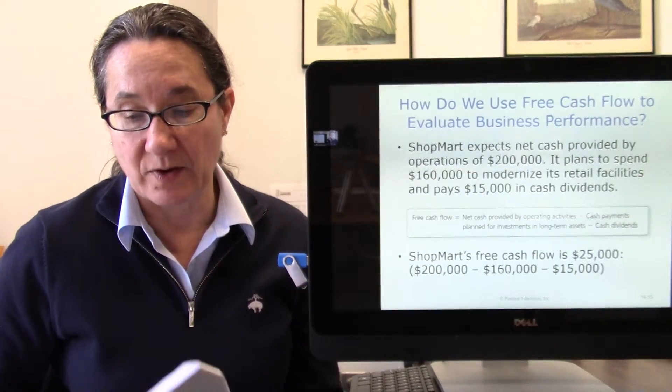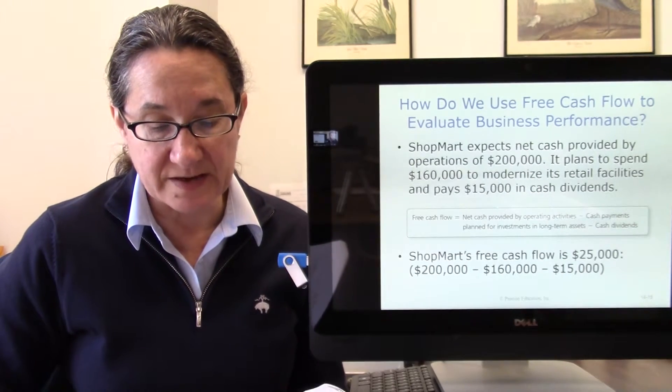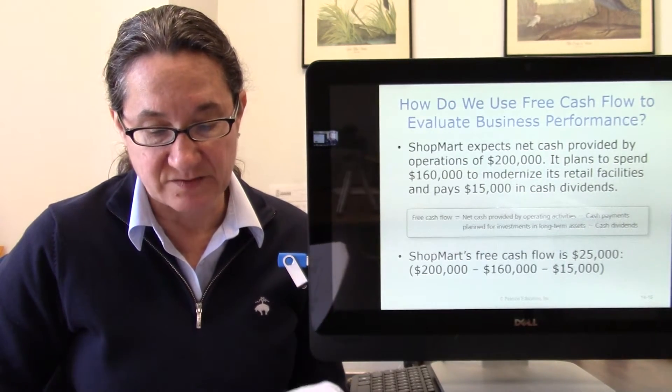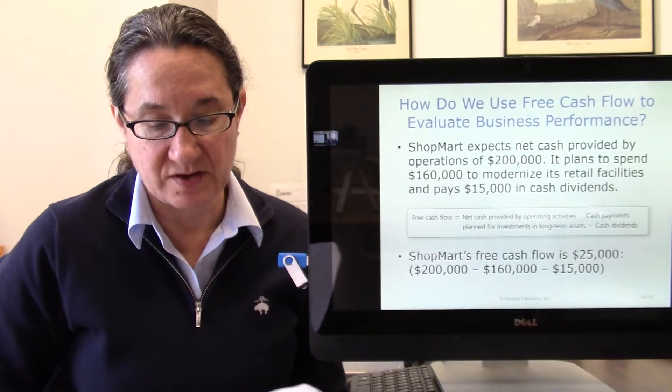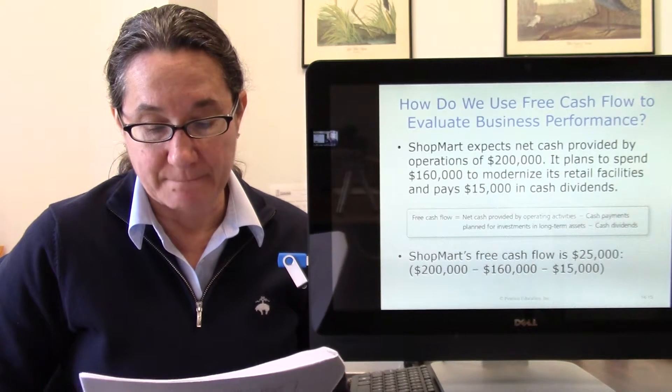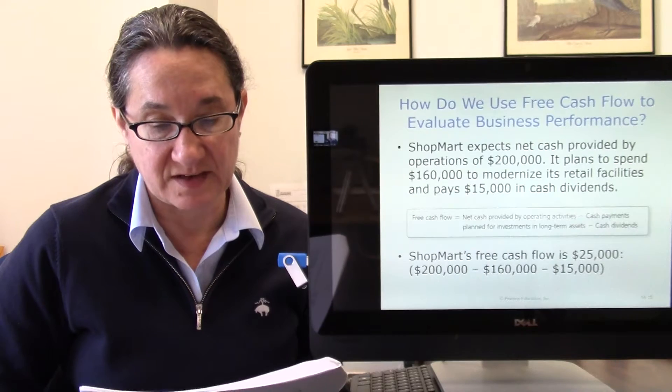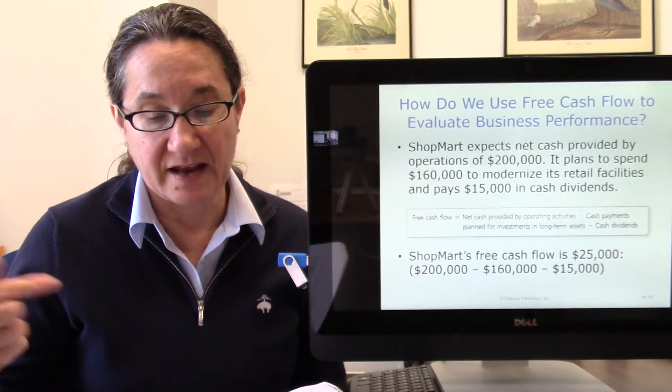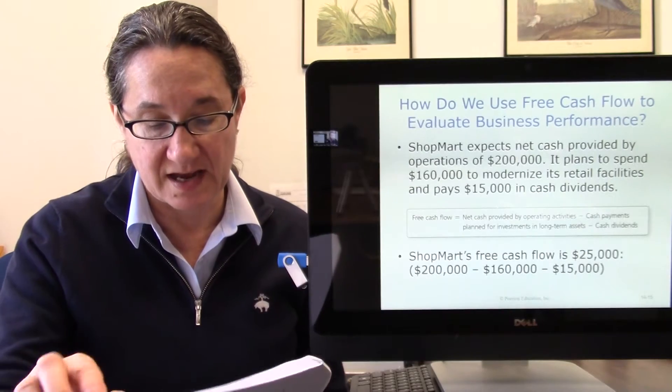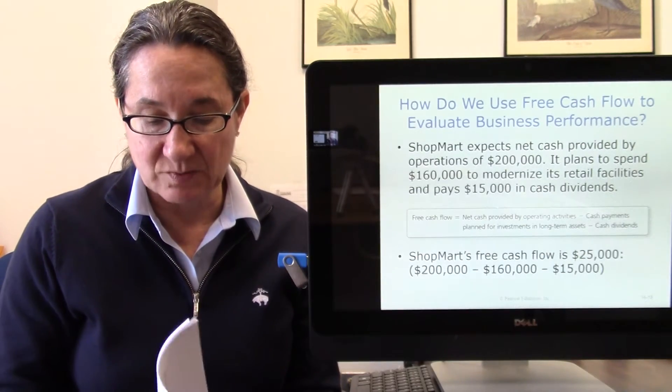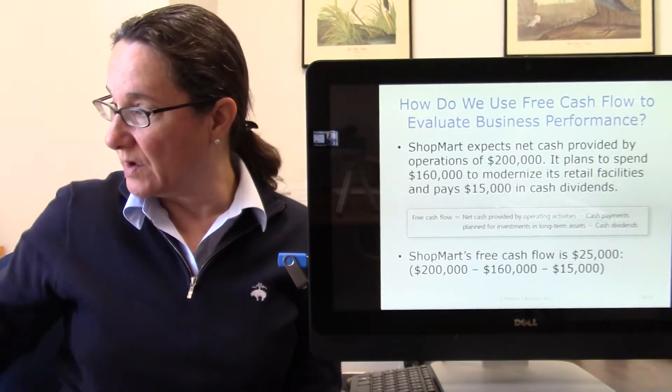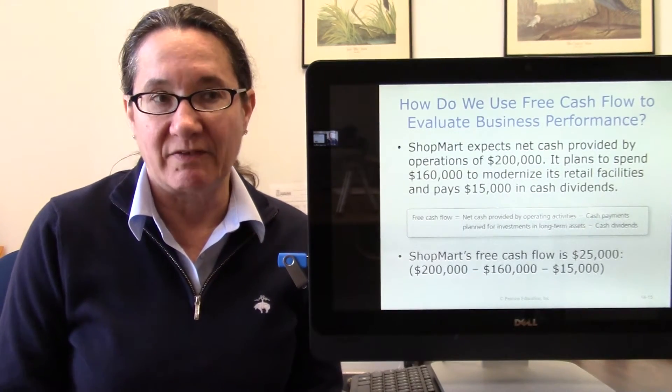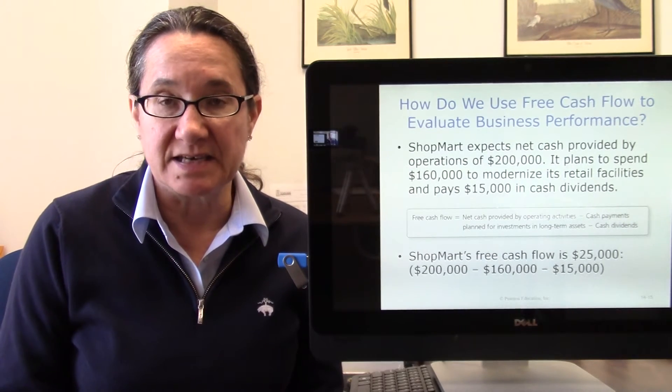How do we use free cash flow to evaluate business performance? Many companies use free cash flow to estimate the amount of cash that would be available for unexpected opportunities. ShopMart's free cash flow equals $25,000 which you get by taking $200,000 minus $160,000 minus $15,000. They have $200,000 cash, they're planning to spend $160,000 and they know they're going to pay $15,000 in dividends. So they've got some extra money, they've got $25,000 free cash flow that they could spend on something. Investors like that. They like to see some free cash flow because if an opportunity comes along they don't want that company to miss it.